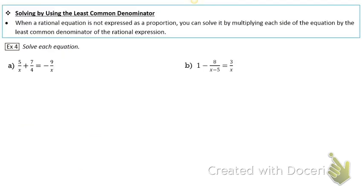When a rational equation is not expressed as a proportion, you can solve it by multiplying each side by the least common denominator of the rational expression — which is what we did in the last word problem. So I'm going to multiply both sides of the equation by 4x. In the first fraction the x will cancel, and in the second fraction the 4 will cancel.